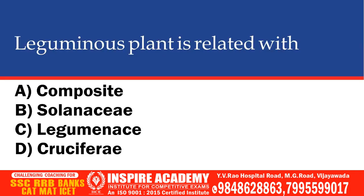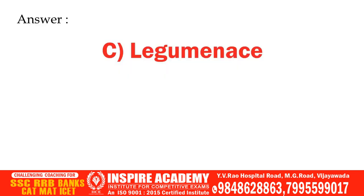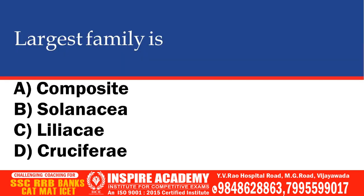Leguminate plant is related with which family? Options: Compositae, Solanaceae, Leguminosae, Cruciferi. The correct option is Leguminosae.